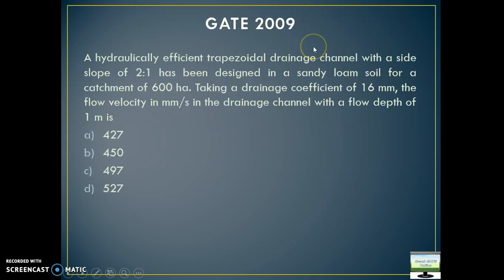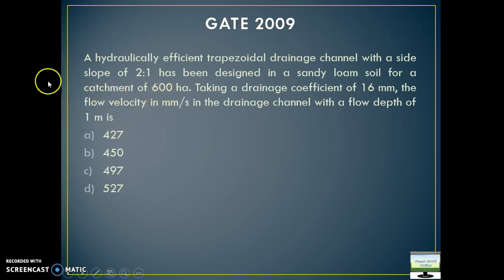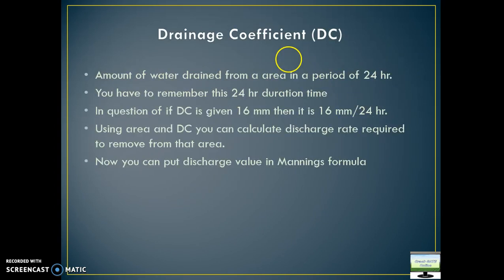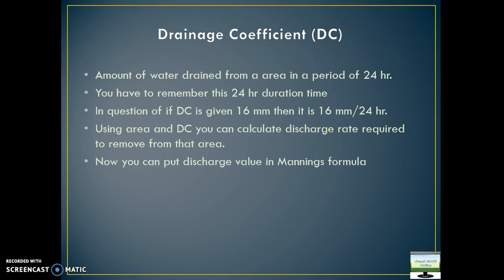Let's see the next question — it is a 2009 question. They are also saying most efficient channel, side slope is given, drainage coefficient is given. And what are they asking? They are asking about flow velocity in mm per second, and depth of flow is also given. So now what is the use of drainage coefficient? Let's first discuss about drainage coefficient. In simple one-line expression: it is the discharge from a particular area in a period of 24 hours. Even if they have not given duration, it is understood that drainage coefficient is always defined for 24-hour duration only.